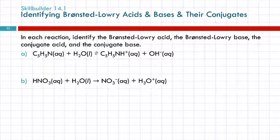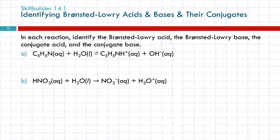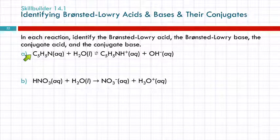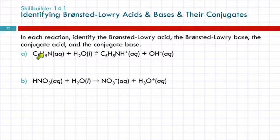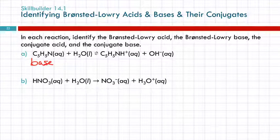Here's a problem type we should be able to do: in each reaction, identify the Brønsted-Lowry acid, the Brønsted-Lowry base, the conjugate acid, and the conjugate base. The acid and base are always on the reactant side; the conjugate acid and conjugate base are on the product side. If a reactant doesn't start with H but we need to figure out its role, we look at what happened to it: if it accepted a proton, it's the base. For example, if H₂O became OH⁻, it donated a proton — it was the acid.